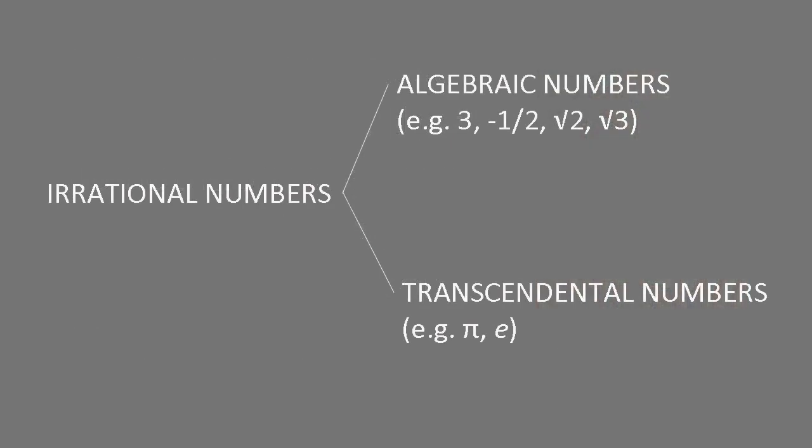There are two types of irrational number: algebraic numbers such as the square root of two, which are the roots of algebraic equations, and transcendental numbers such as pi and e, which aren't.